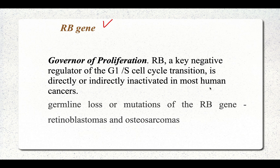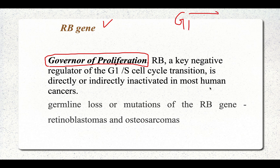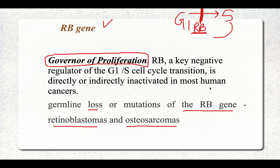The RB gene is also known as the governor of proliferation. It is inactivated in most human cancers and is an important regulator of the cell cycle, playing a key role at the G1 to S phase checkpoint. Loss or mutation of the RB gene can be seen in retinoblastomas, osteosarcomas, and many other human carcinomas.